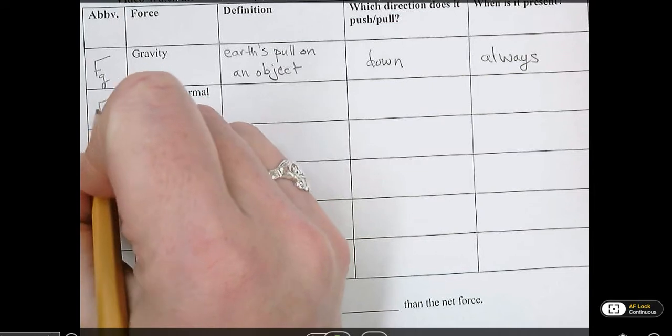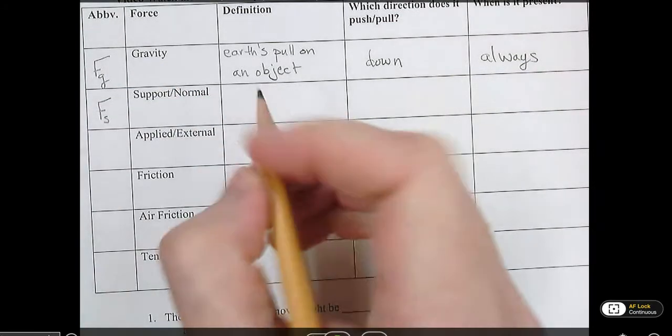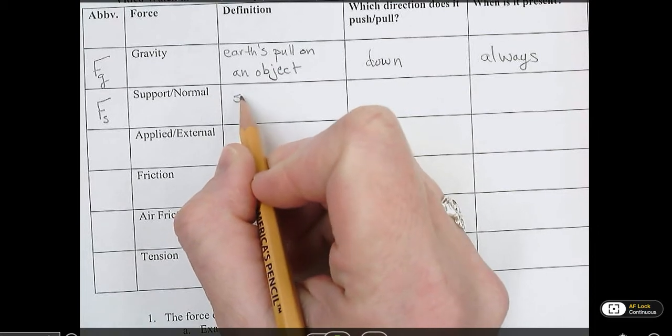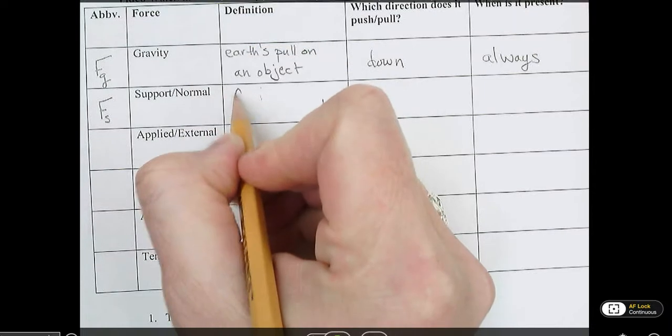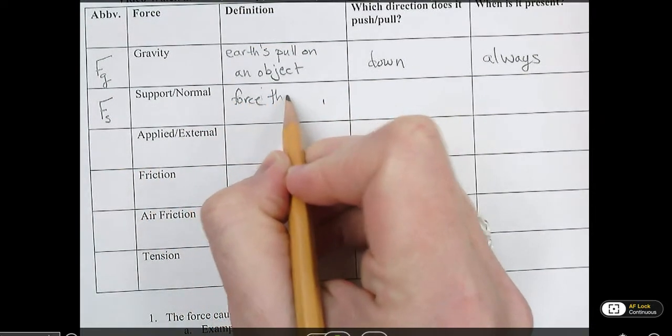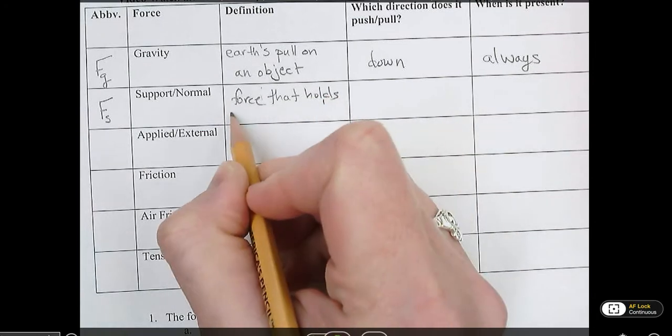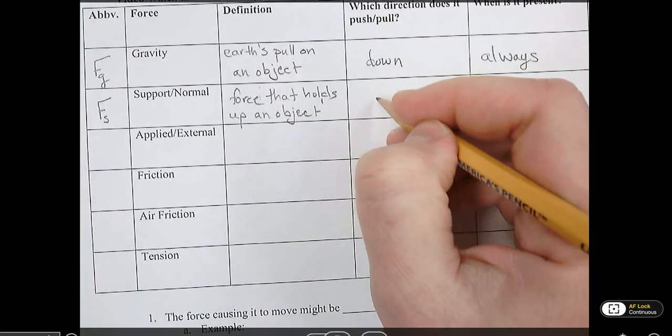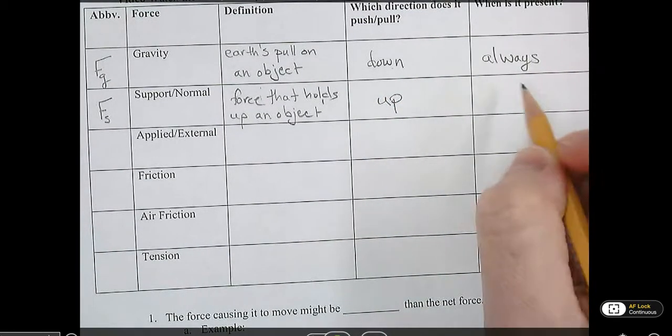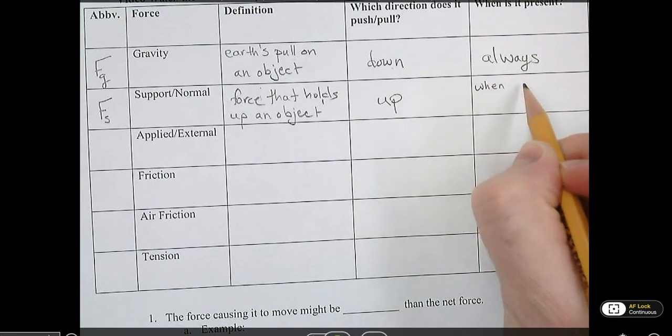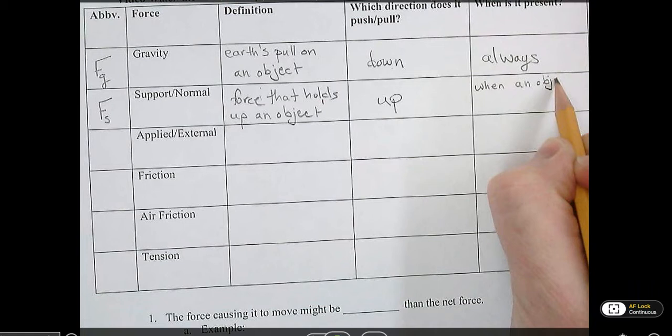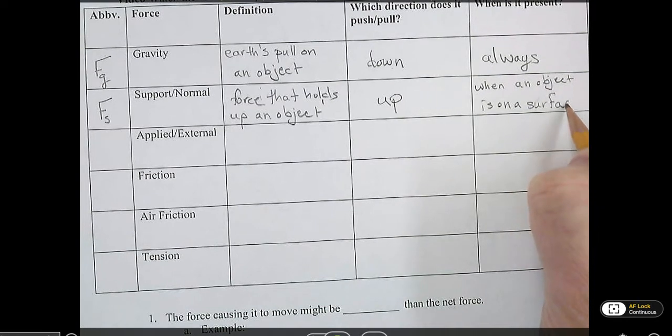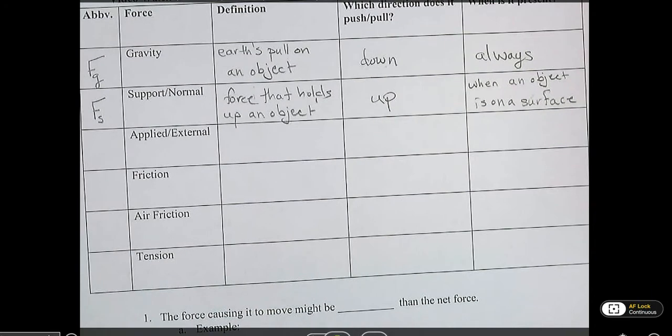Support or normal force, we'll abbreviate F little s. The definition is literally the support force, the force that holds up an object. Which direction does it push or pull? It pushes or pulls up, opposite of gravity. And when is it present? When an object is on a surface. So whether that surface is the floor or that surface is a table, there's support force.